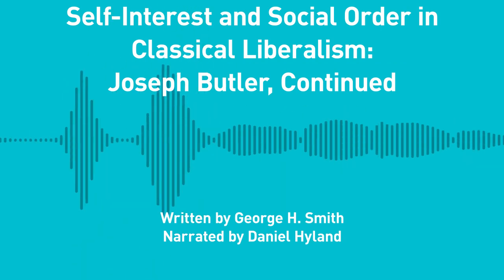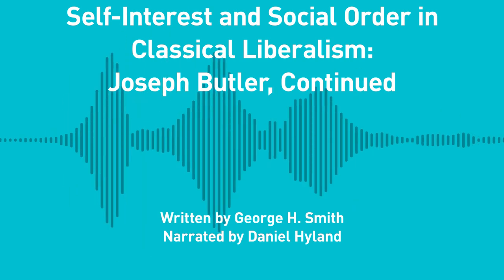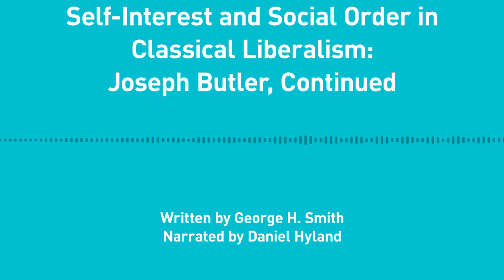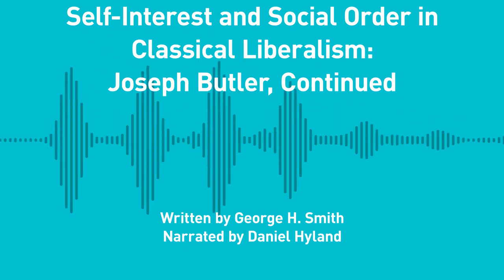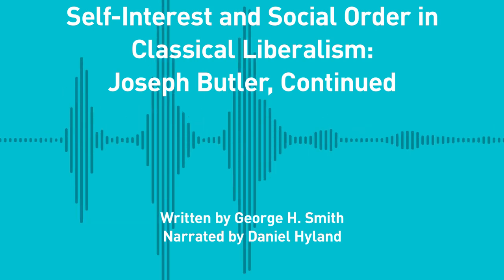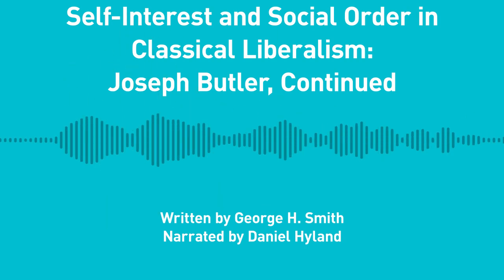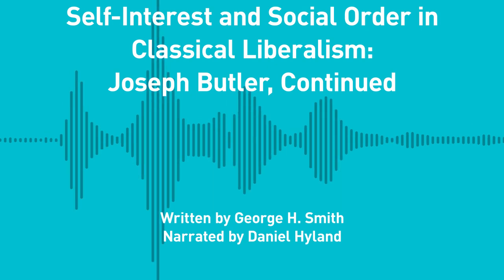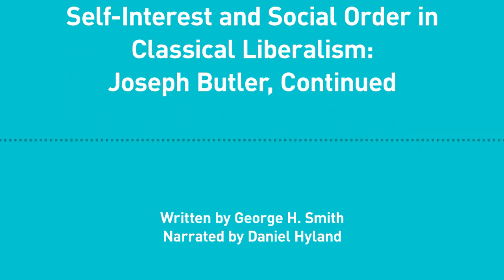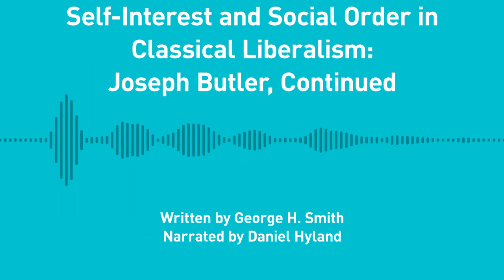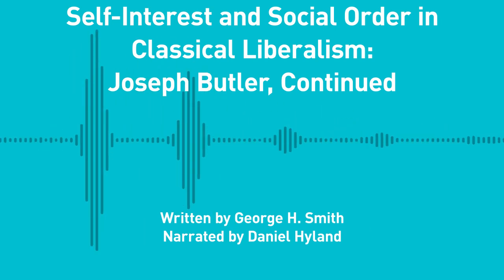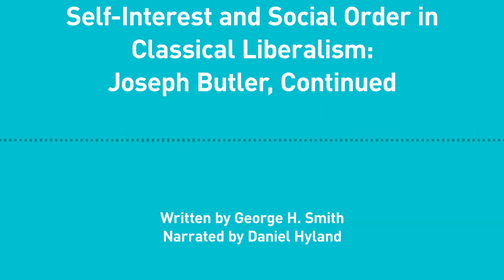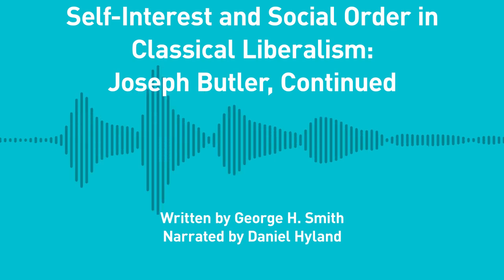In a manner similar to Immanuel Kant's later defense of moral autonomy, Butler declared that it is by this faculty of conscience, natural to man, that he is a moral agent, that he is a law to himself. We are self-legislating insofar as we must decide for ourselves which moral principles to follow, and in making these decisions, conscience has final authority. Unlike Kant, however, Butler did not defend moral duty for its own sake. Rather, Butler regarded happiness as the ultimate end of human action, and happiness cannot be attained by any random means.